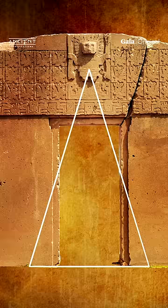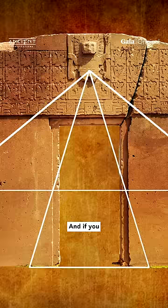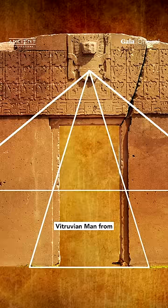If you were to draw a line underneath the rectangular windows at about the midpoint and draw the lines, you have another perfect golden triangle. And if you transpose the Vitruvian Man from Leonardo da Vinci's work,